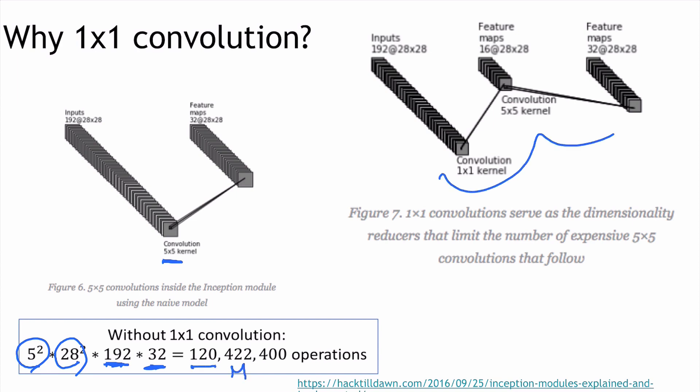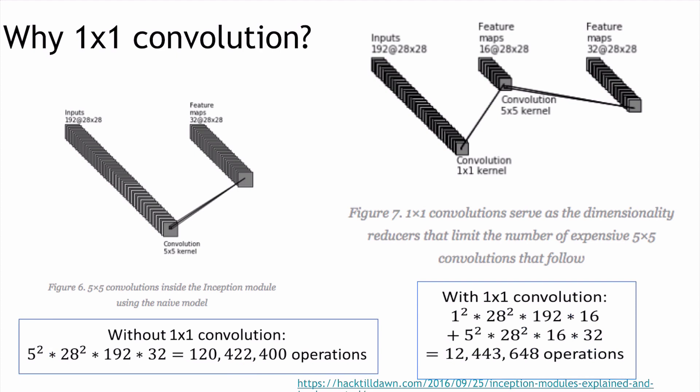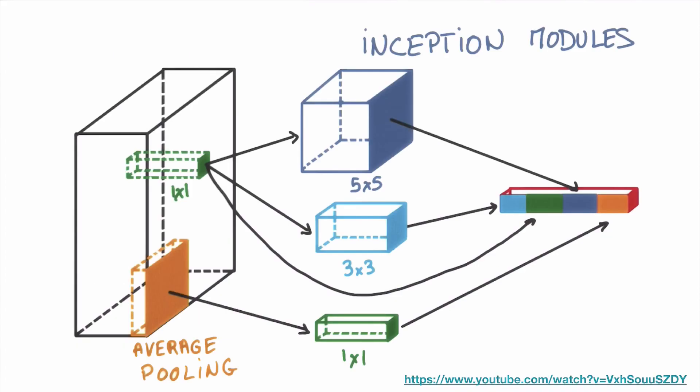But how about using 1x1 convolution first? You can try to compute this one. And if you compute this one, it's really surprising. Because this one is 1x1, just 1, and then 28, and then 192 channel times 16. This is how many operations do we need. And then we do have a second one, plus 5 squared, 28 squared, and this input is 16 after 32. So 16 by 32. And surprisingly, this requires only 12 million operations. If you compare these two, this is really small. This is one of the reasons that why we are using this one by one convolution before we apply other convolutions.